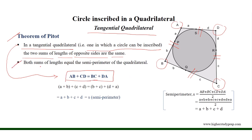Both sums of lengths equal the semi-perimeter of the quadrilateral. We can see here that the points of tangency are P, Q, R, S, for which PA equals SA, SD equals DR, RC equals CQ, and QB equals PB.